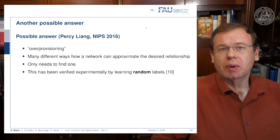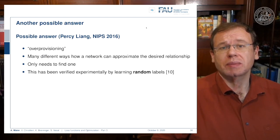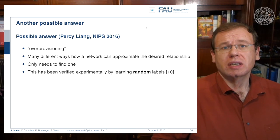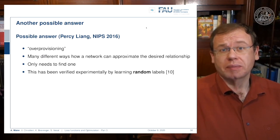One more possible answer to this is a paper from 2016. The authors are suggesting over-provisioning: as there are many different ways of how a network can approximate the desired relationship, you essentially just need to find one. You don't need to find all of them—a single one is sufficient.